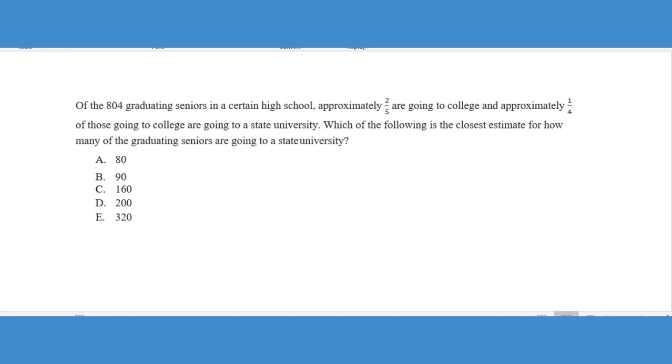So it says of 804 graduating seniors from a certain high school, approximately two fifths are going to college. And then out of those two fifths, approximately one fourth of those going to college are going to a state university. It says, which of the following is the closest estimate? So notice it's an estimate. We're not going to get an exact answer. We're going to end up with some sort of decimal or fractional answer, but then we're going to estimate which one is the closest.